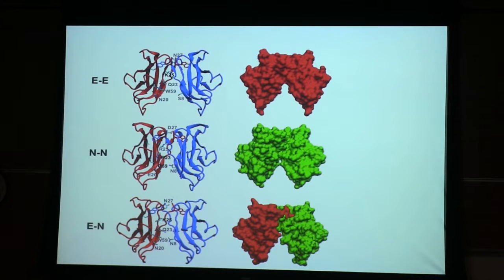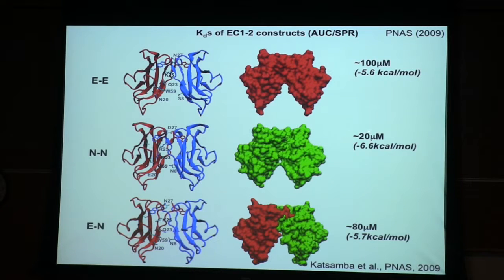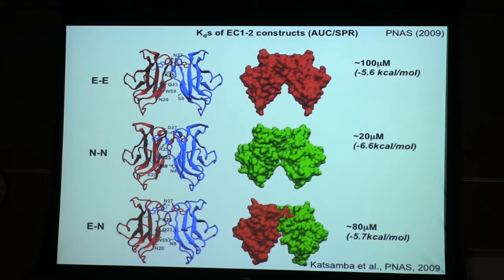At that point, I became an experimentalist. We used analytical ultracentrifuge and SPR — surface plasmon resonance — to measure the binding affinities of these proteins. We found that N-cadherin sticks to N quite more strongly than E to E: this is 100 micromolar, this is a 20 micromolar binder. And EN actually bound better than EE. So these molecules actually did bind heterophilically. Peter Chen, his name was, did get his PhD, so it all worked out.